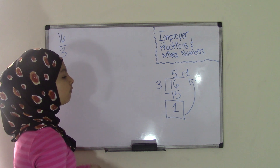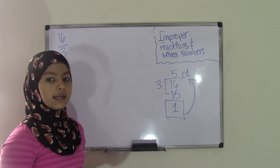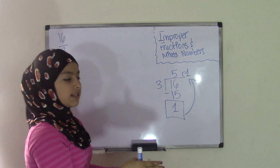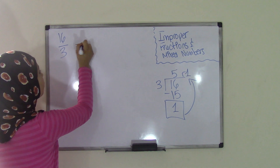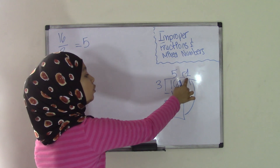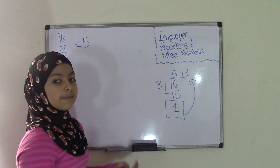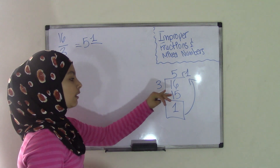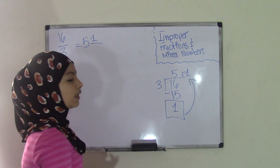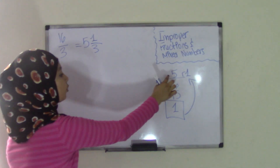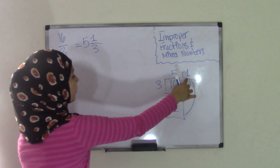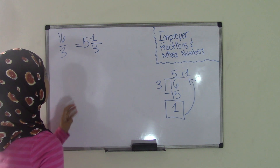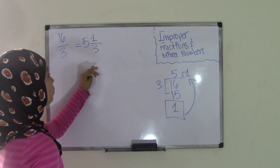You're going to bring up your remainder and write R1 for remainder 1. So now you have your quotient 5, remainder 1. To make this into a mixed number: the quotient, which is 5, becomes your whole number. Your remainder, which is 1, becomes your numerator. That becomes 1 over your divisor, which is 3, and that becomes your denominator. So: quotient equals whole number, remainder equals numerator, divisor equals denominator. The mixed number for 16 over 3 equals 5 and 1 third.